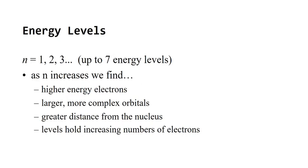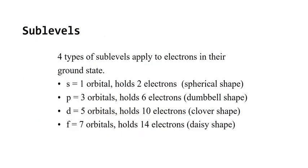Energy levels are denoted by the letter N, and you can go up to seven — one through seven are the energy levels. As N increases you find higher energy electrons, meaning they have more energy themselves. The higher the level they are, they require less and less energy to be ejected. You also have larger, more complex orbitals at a greater distance from the nucleus, and the levels hold an increasing number of electrons.